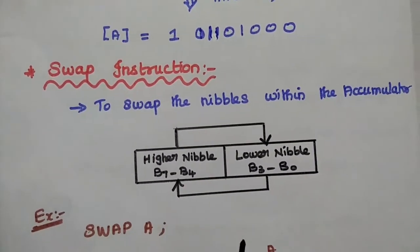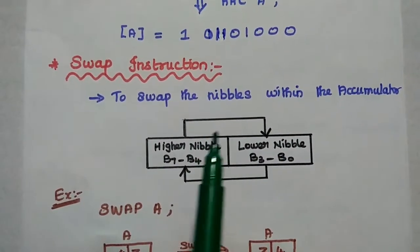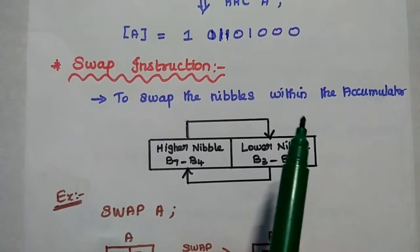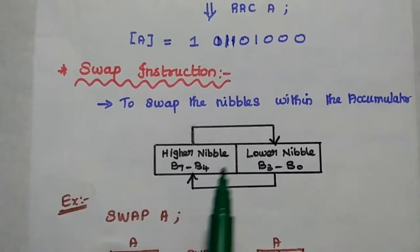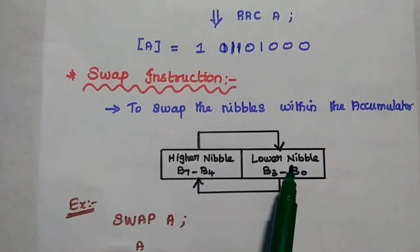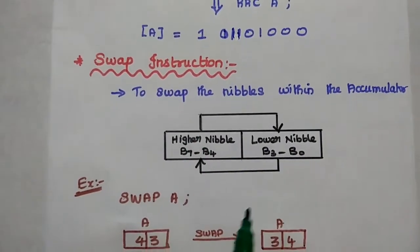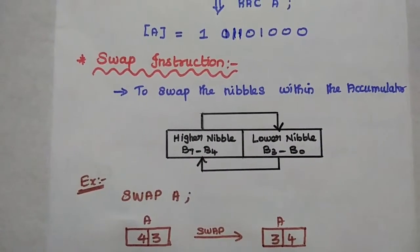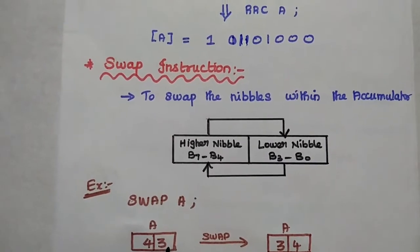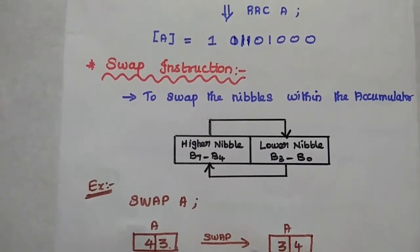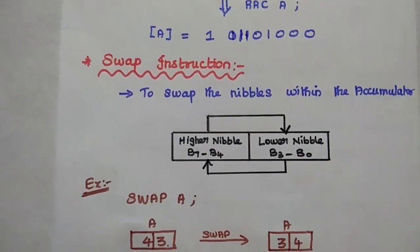The next instruction is the swap instruction. Swap exchanges the nibble values within the accumulator — the lower nibble moves to the higher nibble position and the higher nibble moves to the lower nibble position. For example, the lower nibble 3 becomes the higher nibble and the higher nibble 4 becomes the lower nibble.